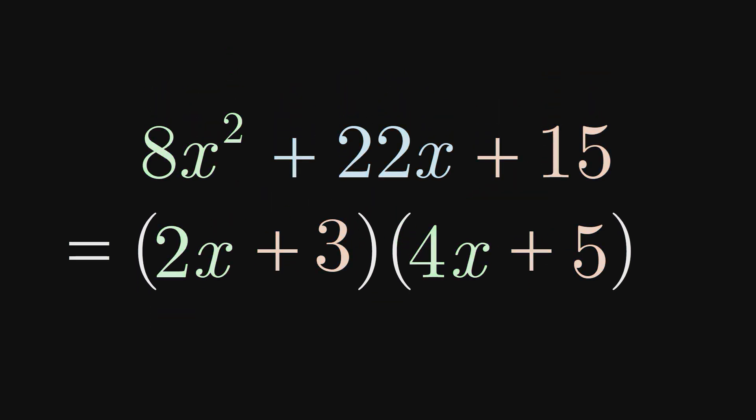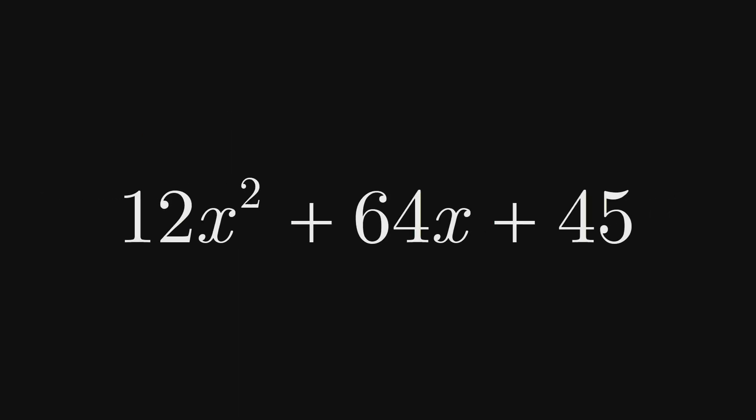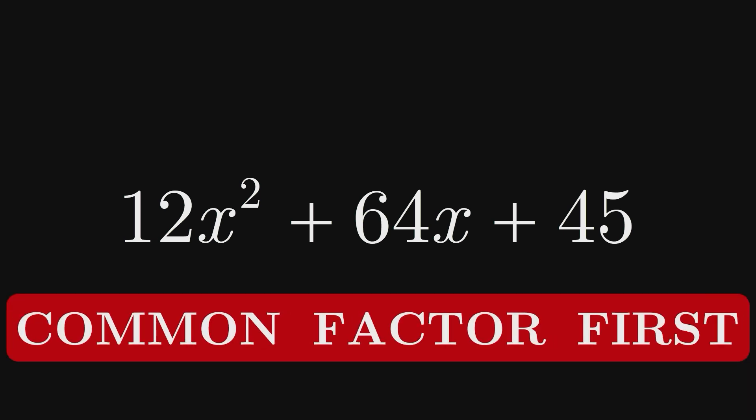Let's try to apply this thinking to another example. Let's factor 12x squared plus 64x plus 45. As always, we should try to common factor first. But since the greatest common factor of 12, 64, and 45 is 1, common factoring isn't fruitful.